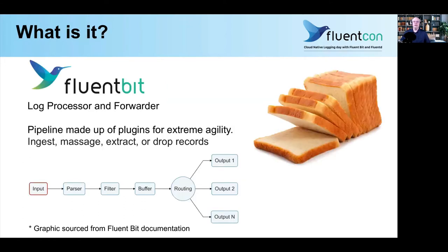What is it? FluentBit. By definition, a log processor and a forwarder. It's a pipeline made up of plugins for extreme agility and flexibility. A few of those I've listed here — to ingest, to massage, to extract or drop records, as you can see in the diagram below.